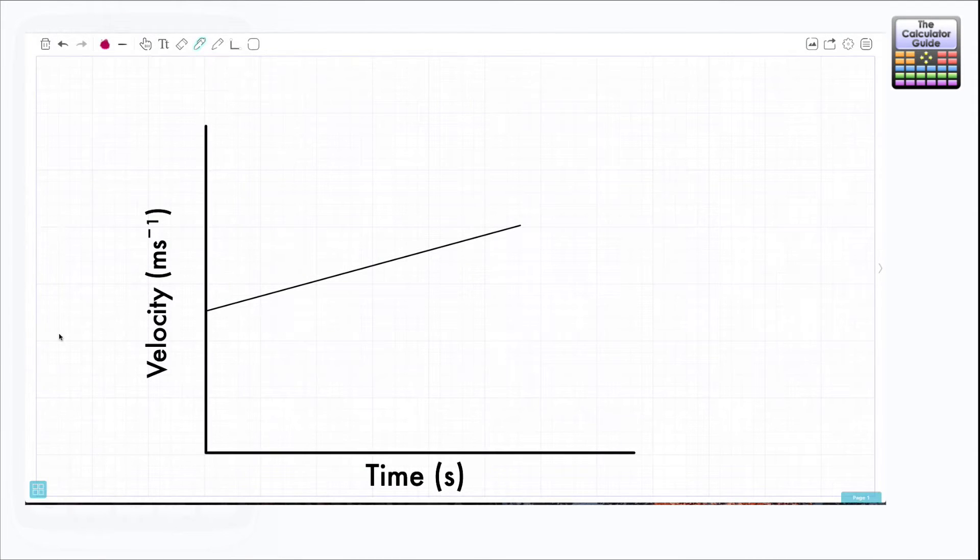here we have a velocity time graph. We have velocity in meters per second on the y-axis and the time in seconds on the x-axis. I should just label the velocity time graph similar to as I did in the previous video.